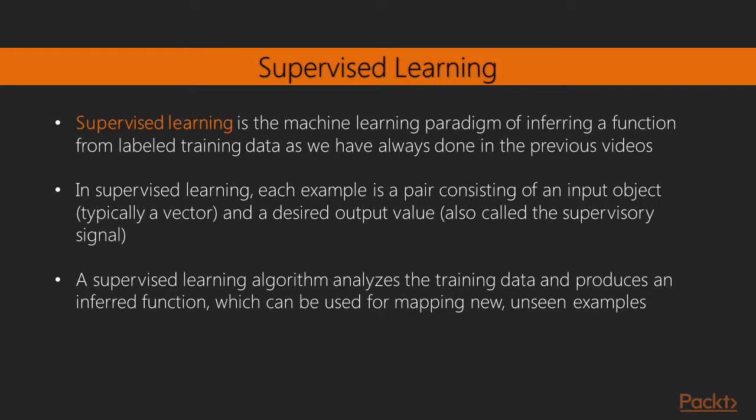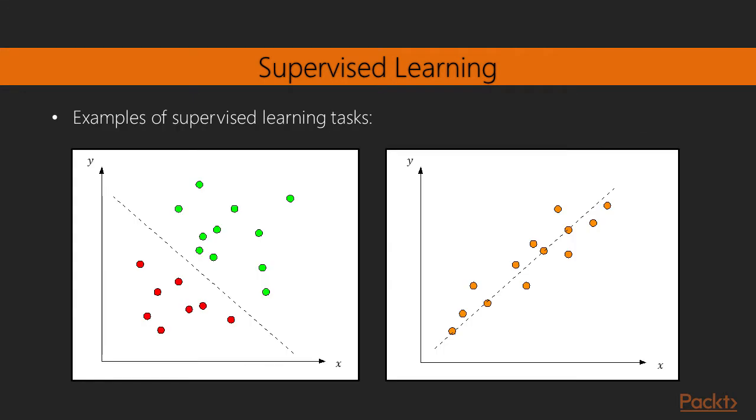As we have seen in the previous sections, supervised learning is the machine learning paradigm of inferring a function from labelled training data, where each example is a pair consisting of an input object, typically a vector, and a desired output value also called the supervisory signal. A supervised learning algorithm can then analyze these examples and produce an inferred function which can be used for mapping new and unseen examples. Typical examples of supervised learning tasks include classification, that is trying to separate examples belonging to different classes, or regression, that is trying to learn the relationship between dependent and independent variables.